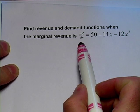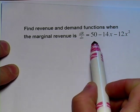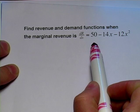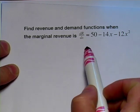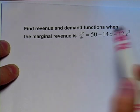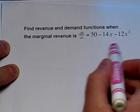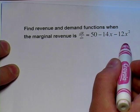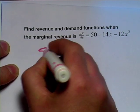And just like the marginal cost function is the derivative of the cost function, the marginal revenue function is the derivative of the revenue function. So to find that revenue function, we're just going to take the antiderivative. So we've got 50 minus 14x minus 12x². Take the antiderivative of that,